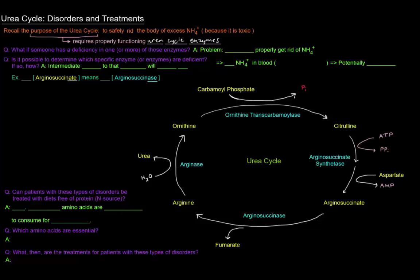So what if someone has a deficiency in one or more of those enzymes? Well, that's a problem because that means that person cannot properly get rid of ammonium ion, and that would mean there would be an increase in the concentration of NH4+ in the blood, which is called hyperammonemia, which is really bad and dangerous and potentially lethal.